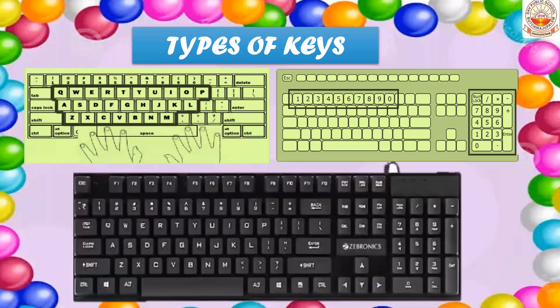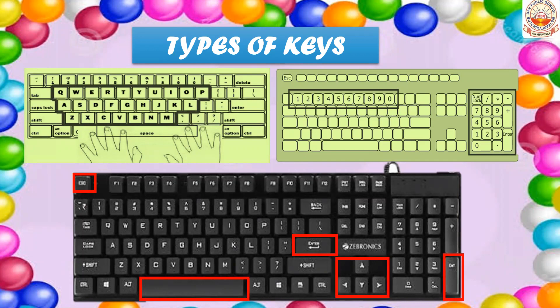Observe the keyboard carefully. You can see there are some more keys on the keyboard other than alphabet keys and number keys. These keys are known as special keys — they are used to perform some special tasks. In this chapter you will learn about some of those special keys.